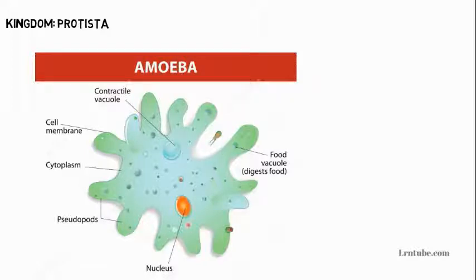The characteristics of Kingdom Protista: they are unicellular organisms, they are all eukaryotic, and they move either by cilia, flagella, or pseudopodia. Some protists are heterotrophic while some are both heterotrophic and photosynthetic. The mode of reproduction is usually asexual by mitosis, while some have sexual reproduction by fusion of gametes.